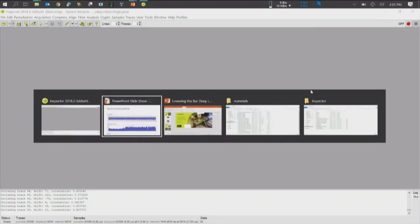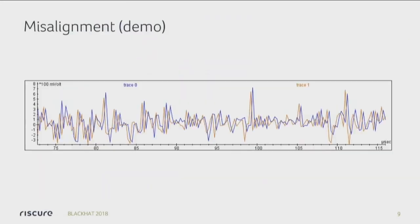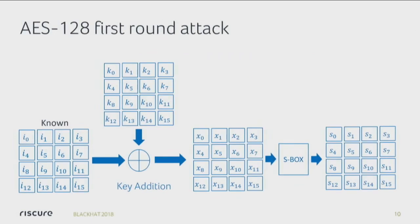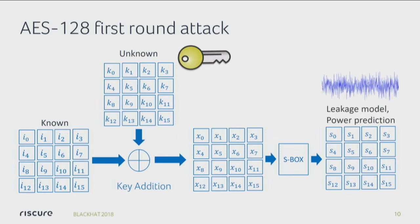Let's move to the science part. So we talked about signal processing and misalignment. Let's say we have an AES-128 implementation. If you look at the first part of the first round, it gets a 16-byte input vector, it XORs the key in — the key is what we're interested in, that's what we want to know, but we don't know it. Then out comes some data, which goes through an S-box. And after the S-box, you get some more intermediate data.